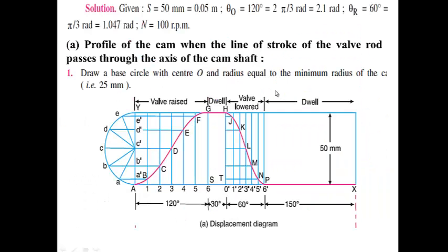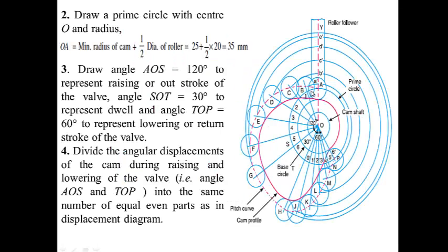With the help of the displacement diagram, we measure lengths 1B, 2C, 3D, 4E and mark these different points on the corresponding radial lines. From point 1 we mark point B at the same distance as shown in the displacement-theta plot. Similarly from point 2 we mark C, from 3 mark D, and so on for E, F, G, H, J, K, L, M, N, P — with P lying on the prime circle. We mark all these points in the same way.